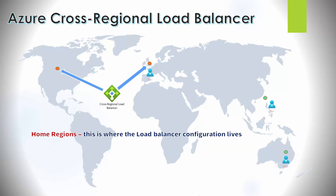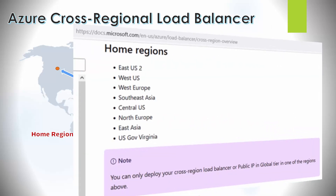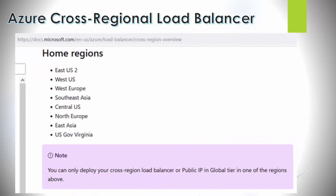The next concept is the home region. This is where the cross-regional load balancer, or the public IP address of the global tier, is actually deployed. If the home region fails, it doesn't impact routing or traffic - it only impacts the management side of things, meaning you will lose management access. There is a list of home regions where you can deploy the cross-regional load balancer.